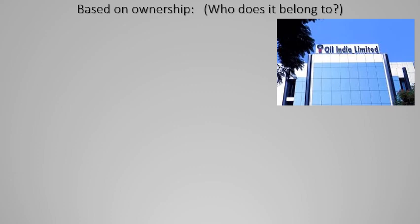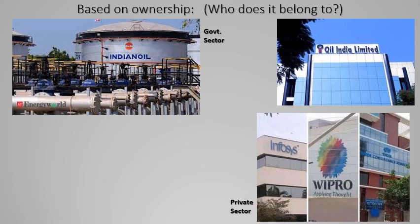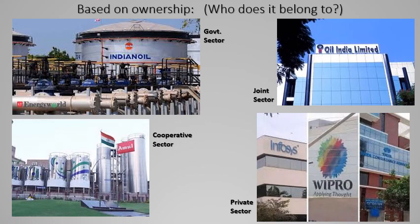Based on ownership — if the government owns it, it is called the government sector, for example Indian Oil or iron and steel companies. Private sector includes IT companies like Infosys, Wipro, and TCS, owned by individuals or private groups. Joint sector companies like Oil India Limited are shared between government and private people. Corporate or cooperative sector is where a group of people contribute what they have and share the benefits.